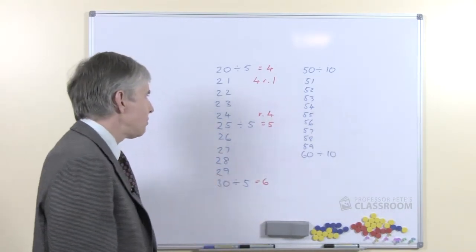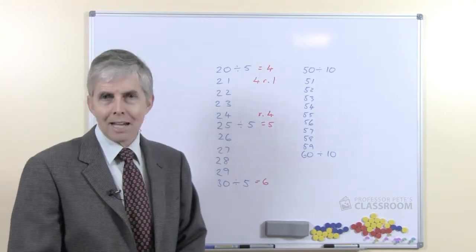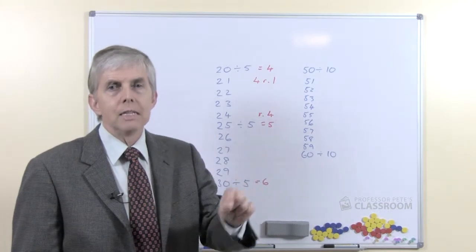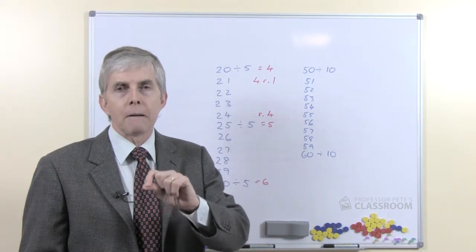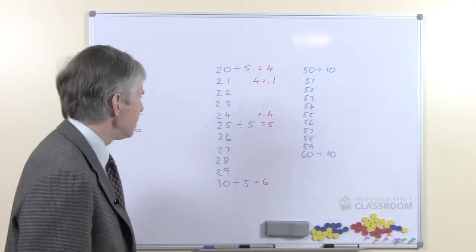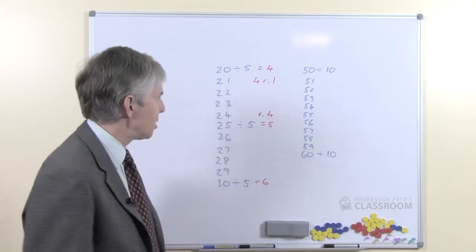So these are relatively straightforward. You could use 10 frames with these, simply because the 10 frames show 2 rows of 5, and so that would be a nice way of showing multiples of 5 and then some left over. So there again, 10 frames once again come to our rescue.